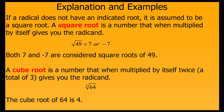A cube root is a number that, when multiplied by itself twice — so a total of three of them — gives you the radicand. For example, the cube root of 64 is 4, because 4 times 4 times 4 is 64.